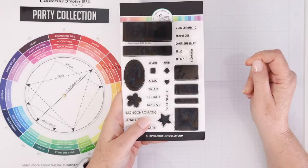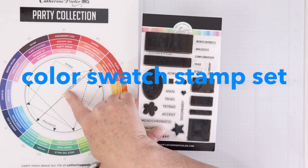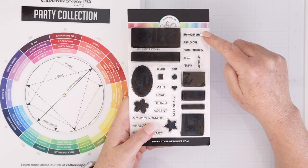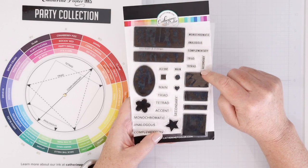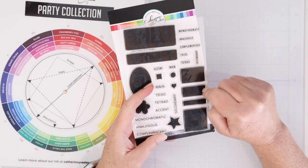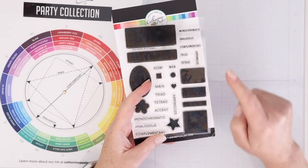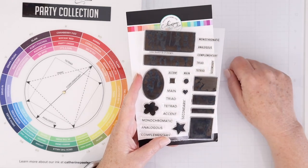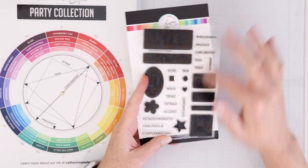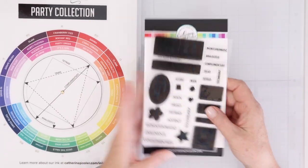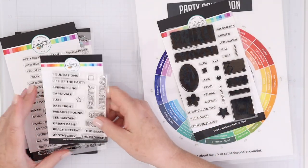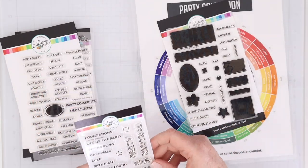Now once I have my wheels, I want to look at the color swatch stamp set. You can see that the color swatch stamp set has names like triad, tetrad, monochromatic, analogous, complementary, and those are all represented on the color wheel as well. So when you're using the color wheel you can use it in combination with this swatch set, and then there's also shapes to swatch out your basic colors as well.